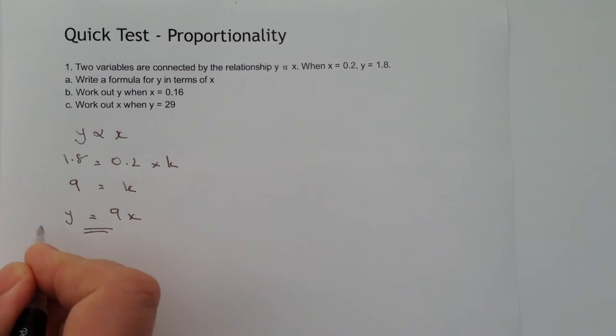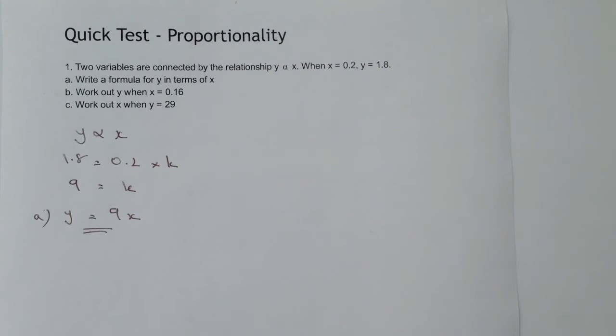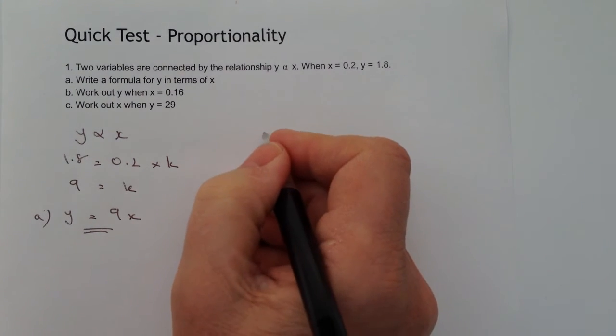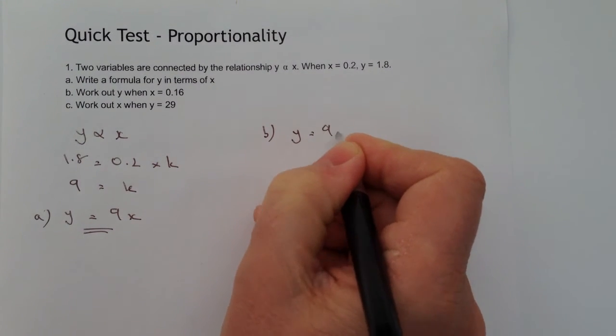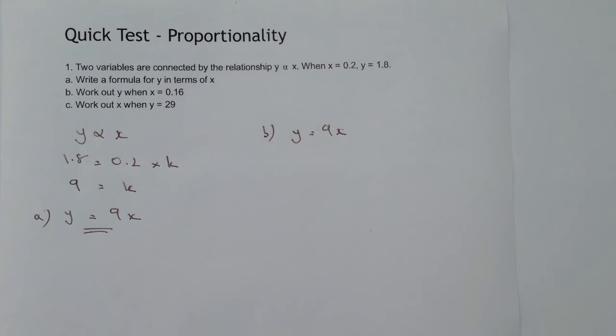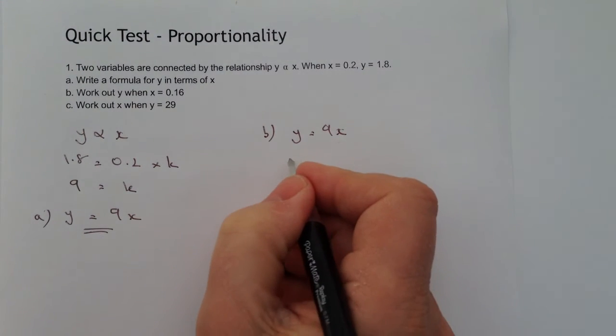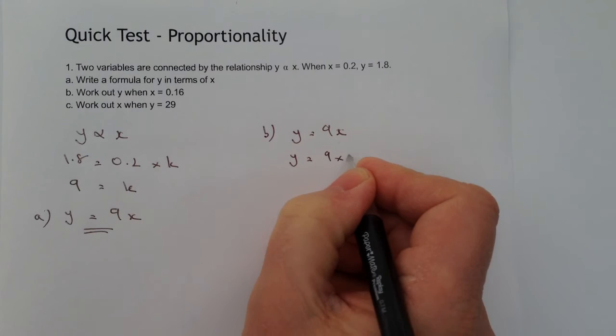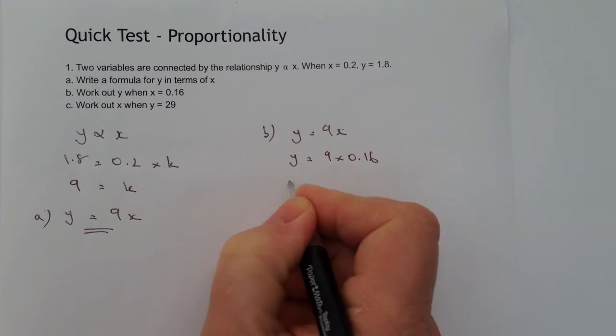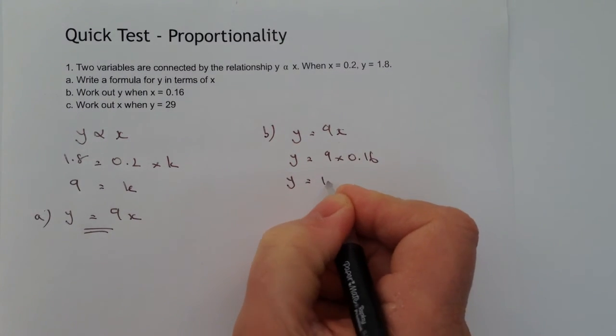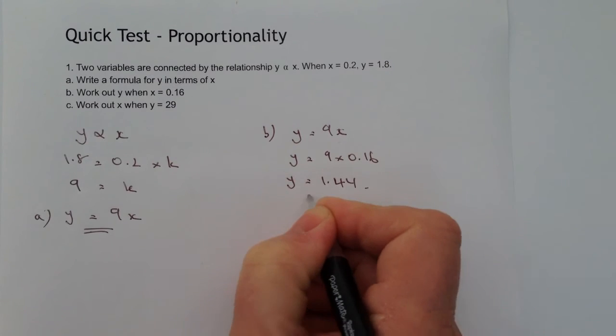We'll go on to then use that formula in working out question b. So let's look at b. Again, if we write the formula y equals 9x, and what it tells us is that we need to work out the value of y when x equals 0.16. So we just plug those numbers in: y equals 9 times 0.16, which means that y equals 1.44. And that's the answer to question b.